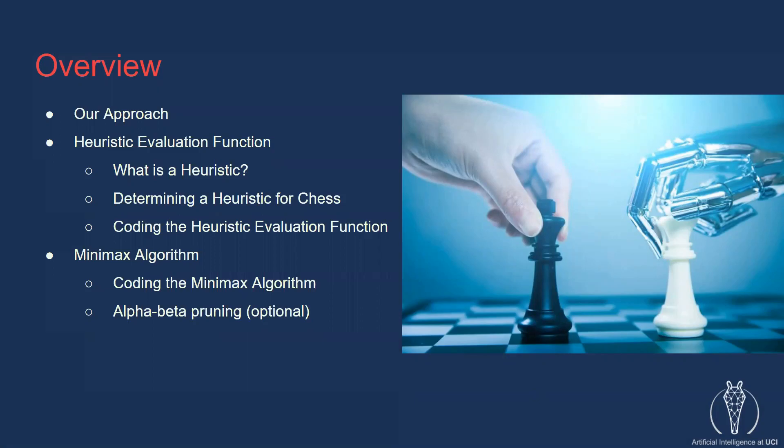Next, I'll define what a heuristic is and explain how we might go about determining a heuristic to use for chess. Once we've done that, we'll write the code for the heuristic evaluation function. Finally, we'll go over how the minimax algorithm works and then write the necessary code for it while discussing possible optimizations, most notably alpha beta pruning.